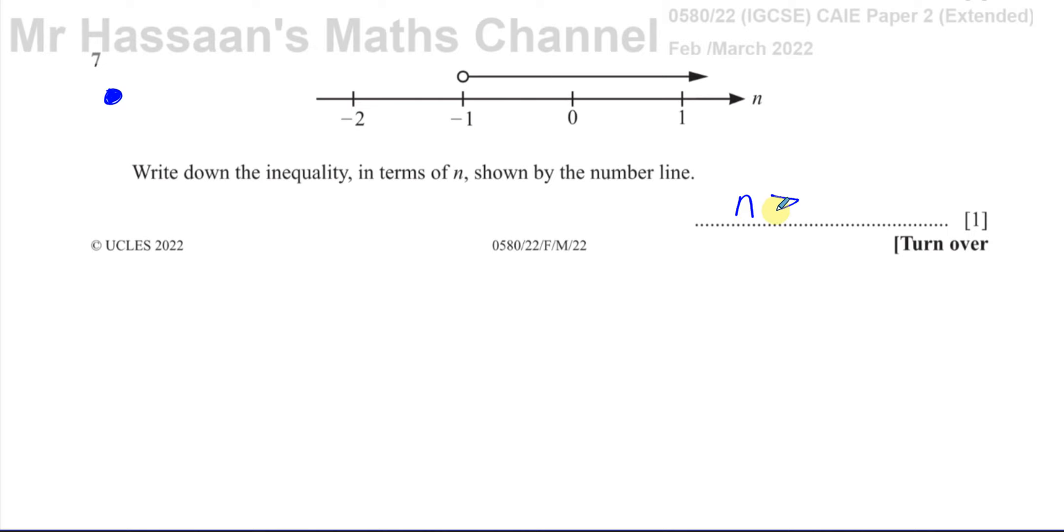So here we have n is greater than minus 1, equal to would be if it was in this case. If it was like this, n is greater than or equal to minus 1, but here it's just greater than.